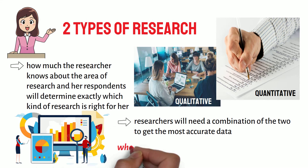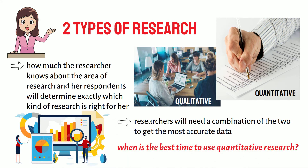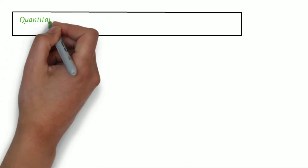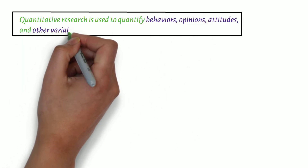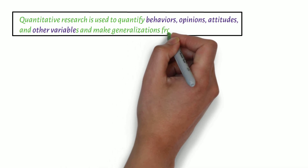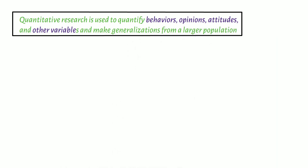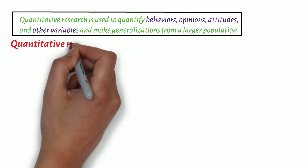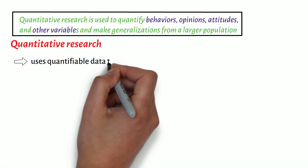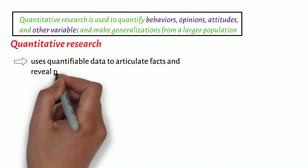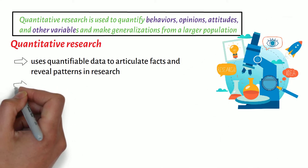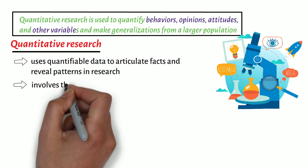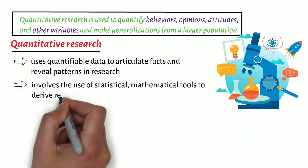But when is the best time to use quantitative research? First, we must remember that quantitative research is used to quantify behaviors, opinions, attitudes, and other variables and make generalizations from a larger population. Hence, quantitative research uses quantifiable data to articulate facts and reveal patterns in research. For this reason, quantitative research involves the use of statistical and mathematical tools to derive results.